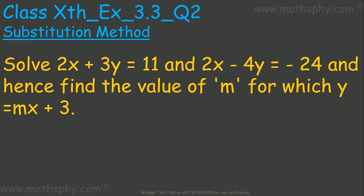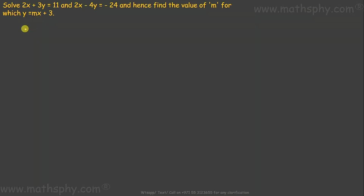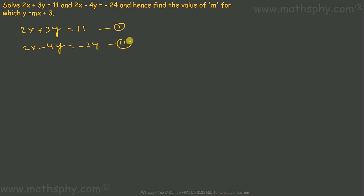This question says: solve 2x plus 3y equals 11 and 2x minus 4y equals negative 24, and hence find the value of m for which y equals mx plus 3. So first of all, let's solve this system of equations. We have 2x plus 3y equals 11 as the first equation, and 2x minus 4y equals negative 24 as the second equation.